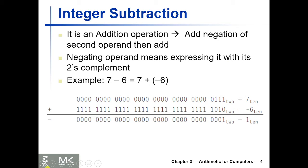Now for subtraction — we could have a separate circuit for it, but we can use the same addition circuit for both, which reduces the design size of the microprocessor. We do this by converting subtraction into addition by adding the negation of the second operand. For example, 7 minus 6 can be converted to 7 plus negative 6, where negative 6 is expressed as its two's complement. Adding a number to the two's complement of another is exactly subtraction.